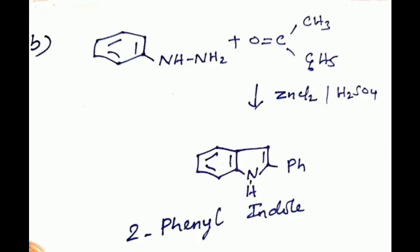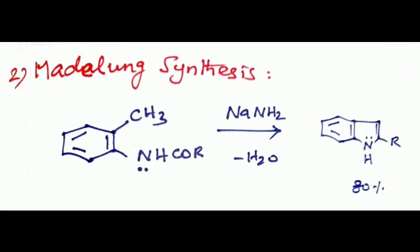Second method synthesis: the cyclization of ortho-acyl amido toluene by a strong base like sodamide and sodium tert-butoxy butoxide. We will get 2-alkyl indole. We can increase the alkyl group, that is R group. For the product, we will get 80% yield in this synthesis system.